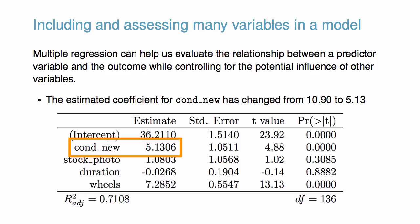That is, when controlling for the other variables, the impact of a game's condition is actually much smaller than we originally estimated.